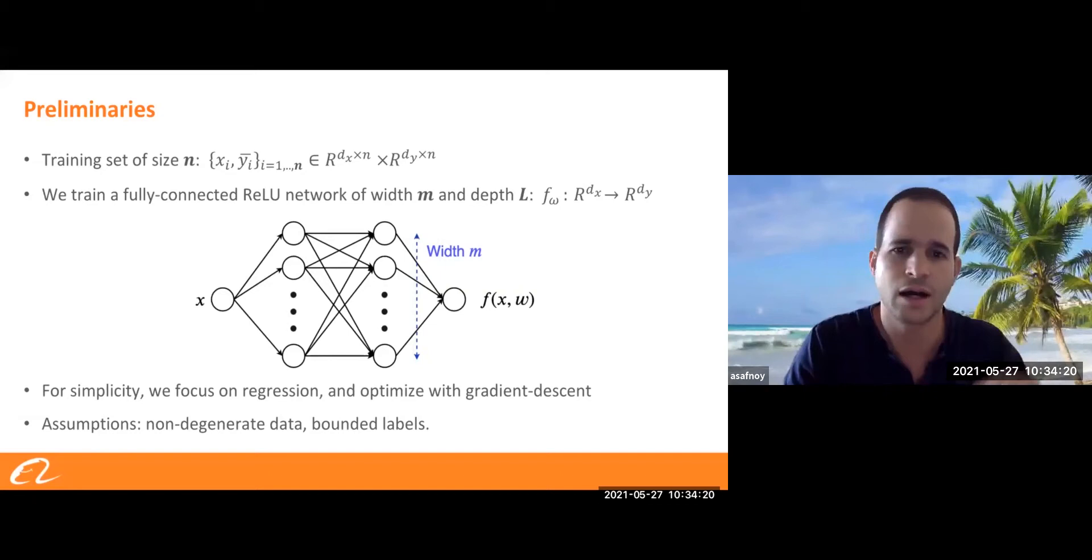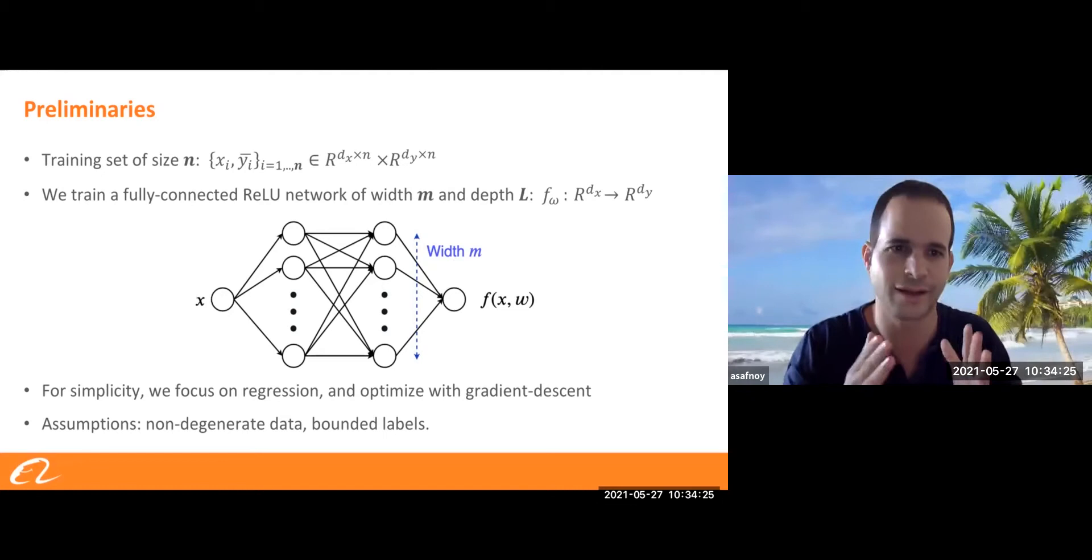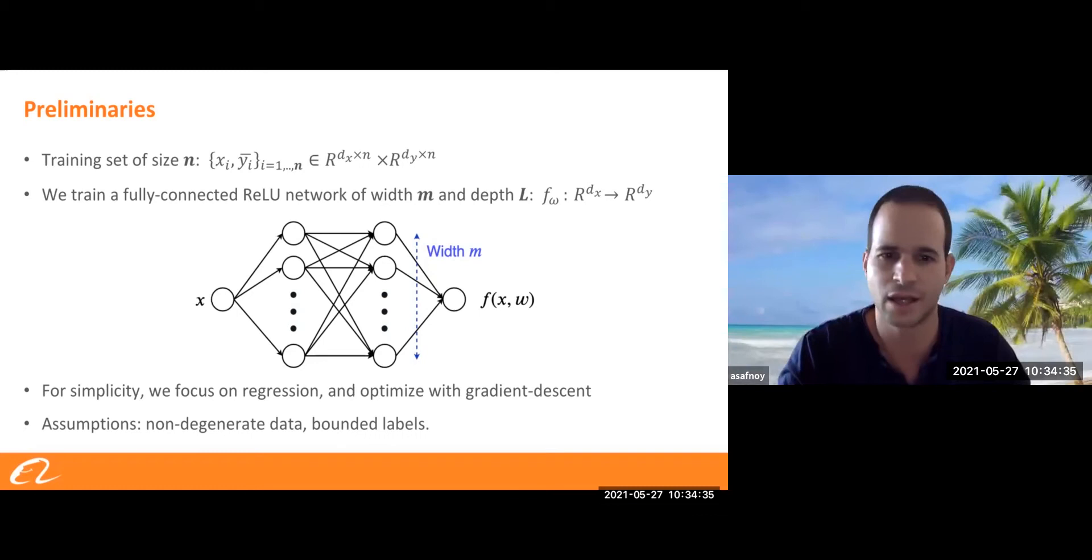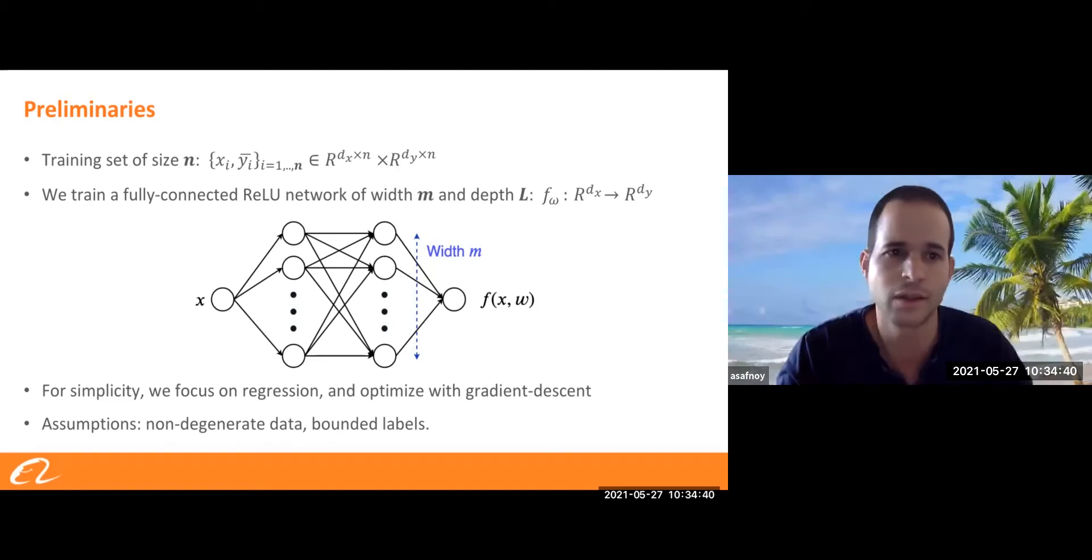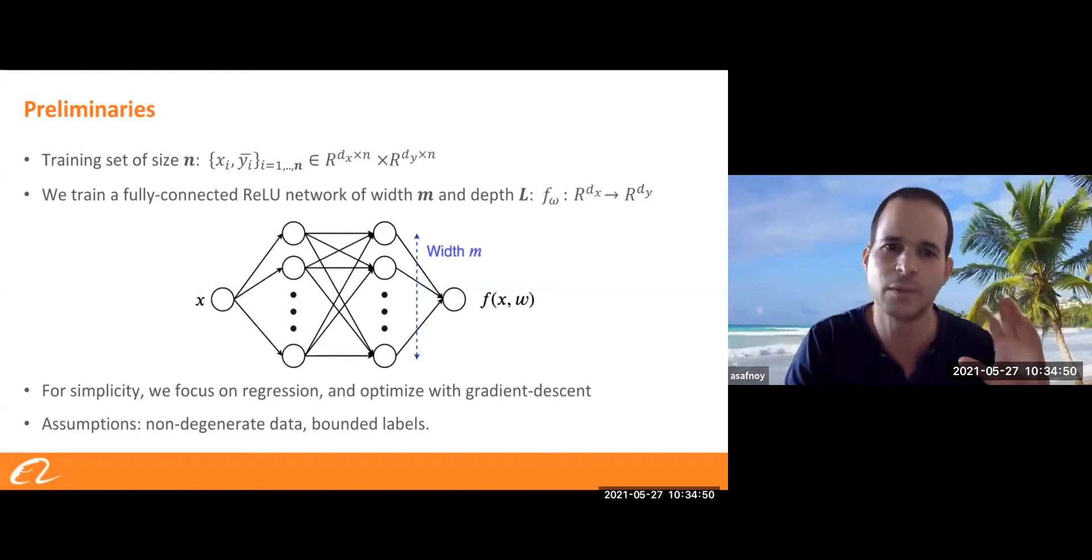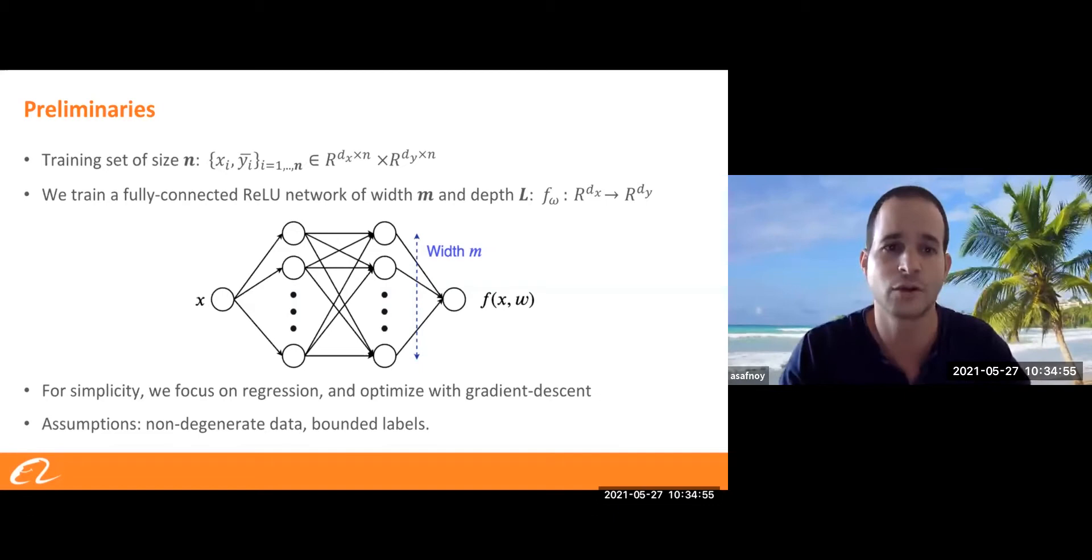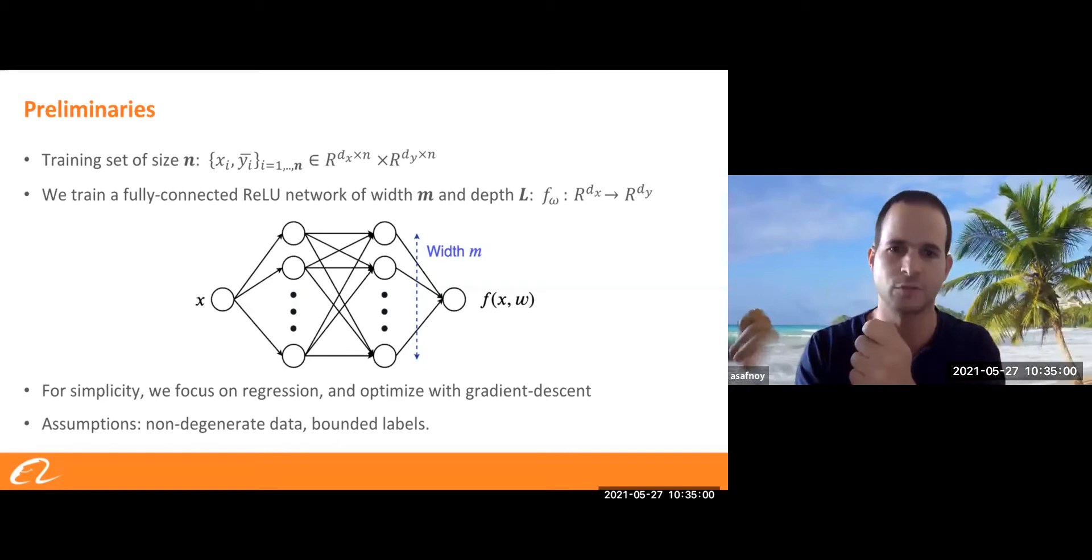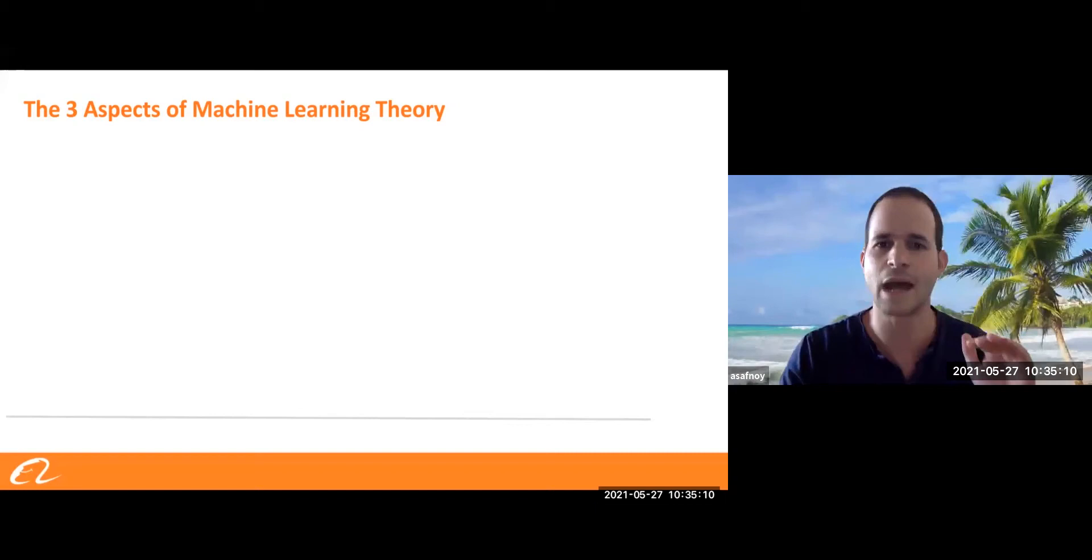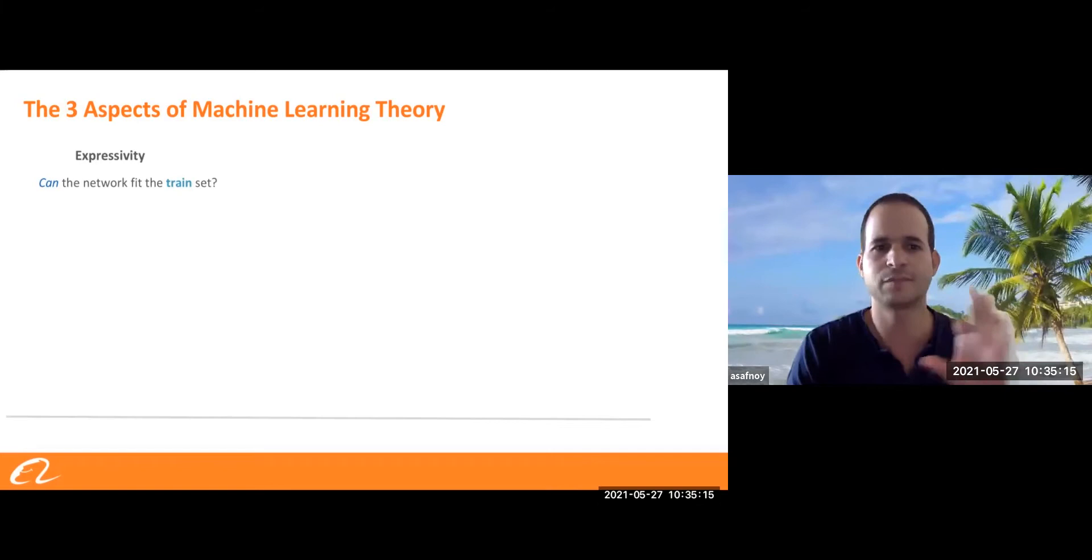The problem I'm going to present is the most simple one you can think of. We got a training set of size N, and we train a fully connected deep ReLU network of width M and depth L. And for simplicity, we focus only on the regression task, probably the most simplest one, but most of the theory here can be extended to classification and multi-label classification. We assume that the data is non-degenerate. So we don't have two examples with the exact same input and totally different output.